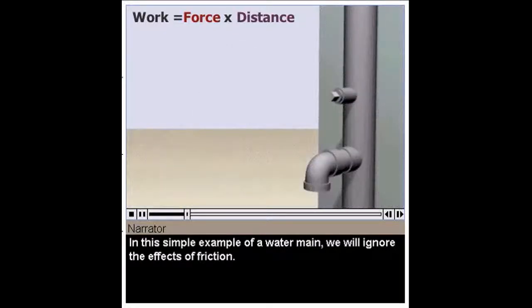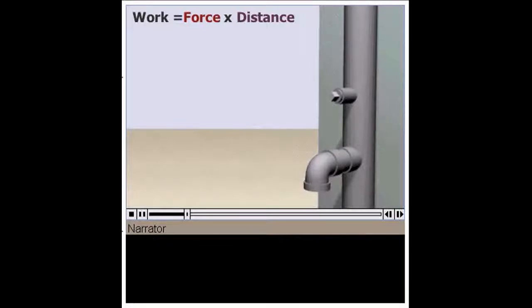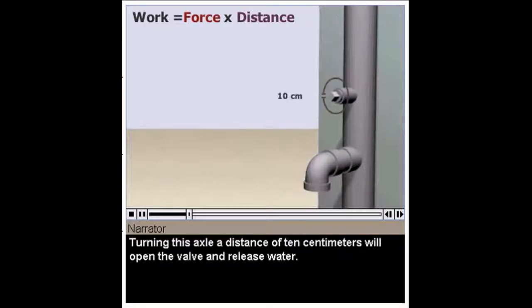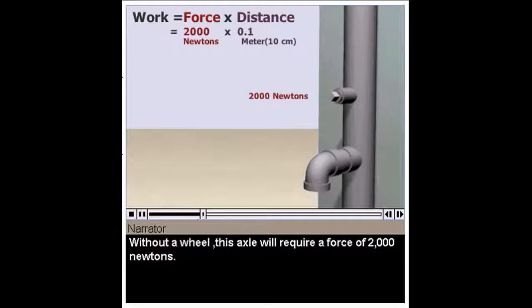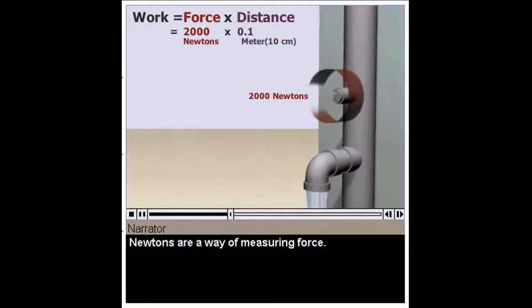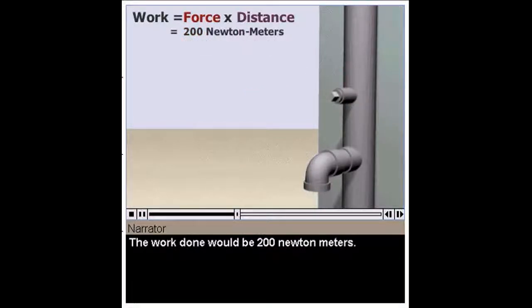In this simple example of a water main, we will ignore the effects of friction. Turning this axle a distance of 10 centimeters will open the valve and release water. Without a wheel, this axle will require a force of 2,000 newtons. Newtons are a way of measuring force. Applying this much force would be very difficult. The work done would be 200 newton meters.